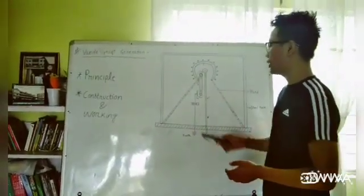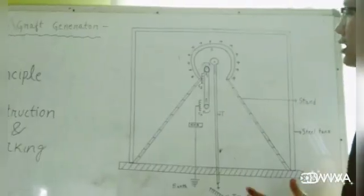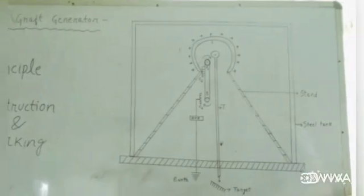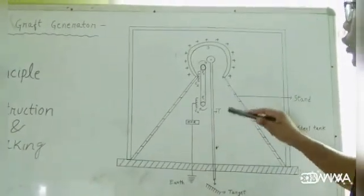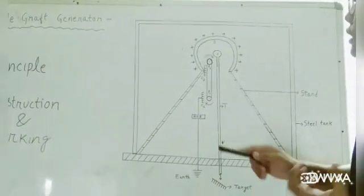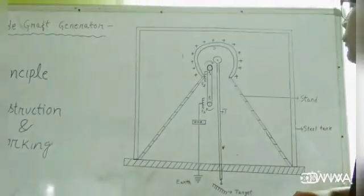Now the working principle: when C1 is connected to a high positive potential, it releases a positive charge which goes through the belt. As you can see, the belt keeps moving in a clockwise direction. The charge goes through comb C2, which receives the positive charge, and it immediately moves to the outer surface of the shell.